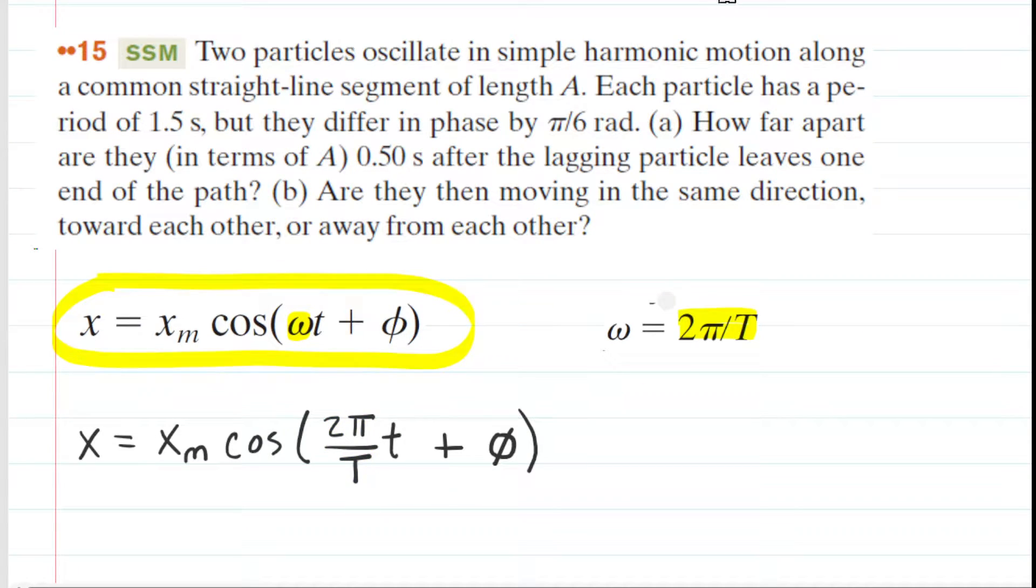As noted, we're going to be setting up an equation for each particle. The question notes that the motion of the particles differs in phase by π/6 radians. So what does that mean? Well, it means that for particle 1, we can let the phase angle equal 0 radians, and for particle 2, we can let the phase angle equal π/6 radians. Again, that's because they differ in phase by π/6.